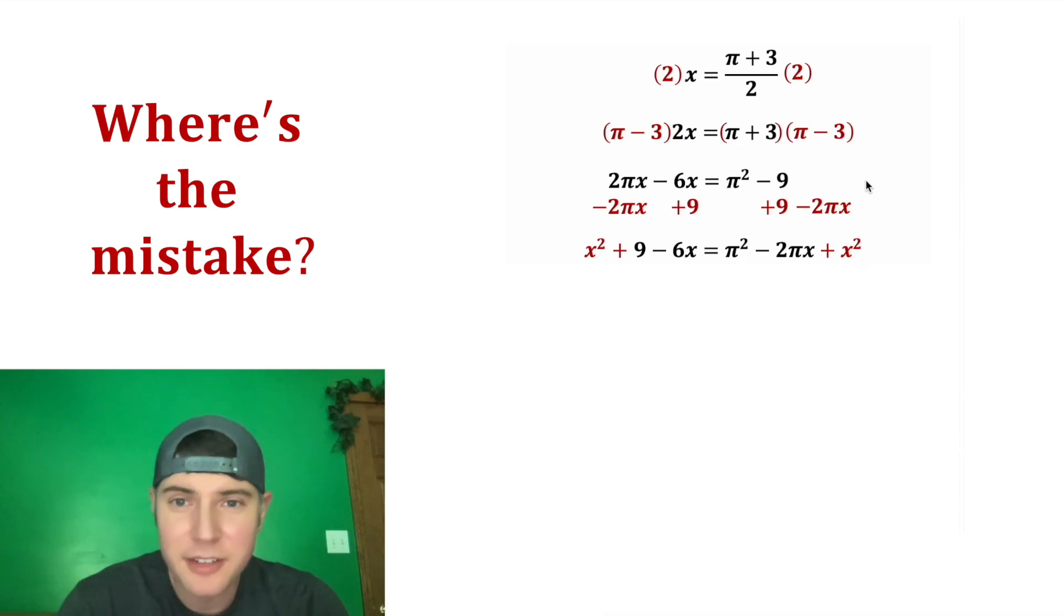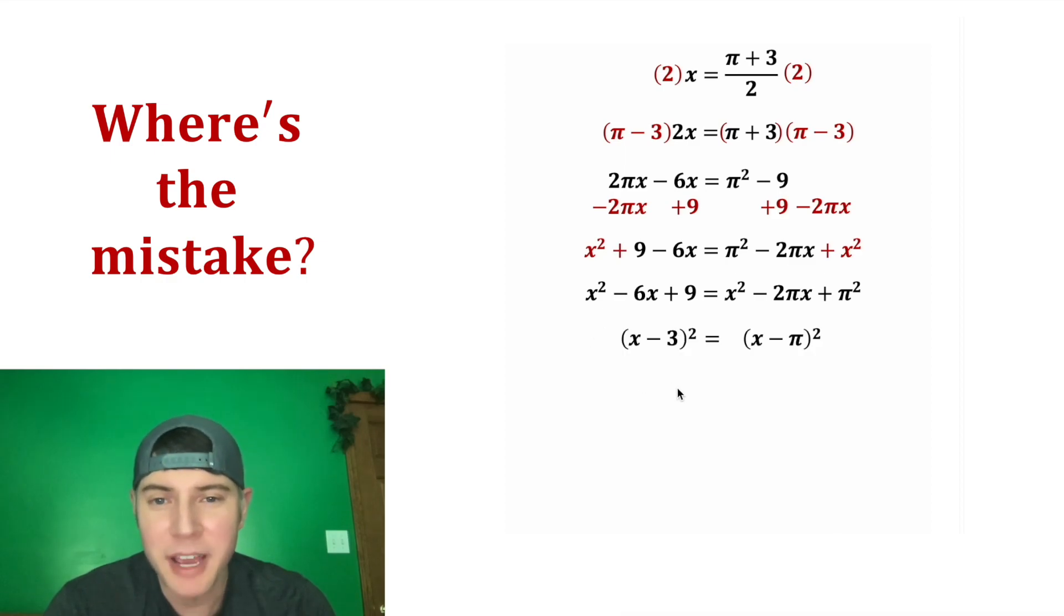And then let's add x squared to both sides of the equation. Then let's rearrange the order of a couple of these. This is a perfect square trinomial. It ends up being x minus 3 squared. If we multiply x minus 3 times x minus 3 it brings us back to this.